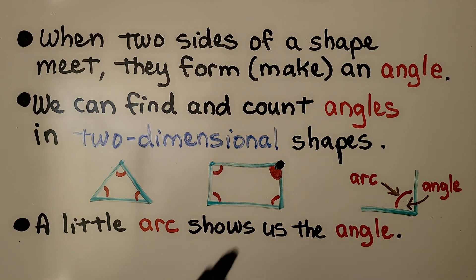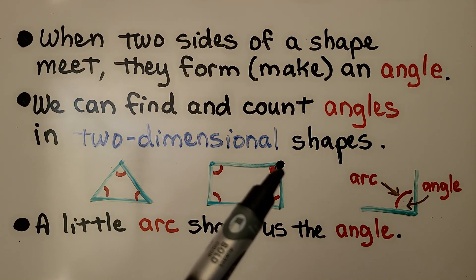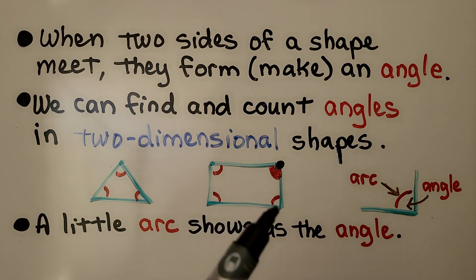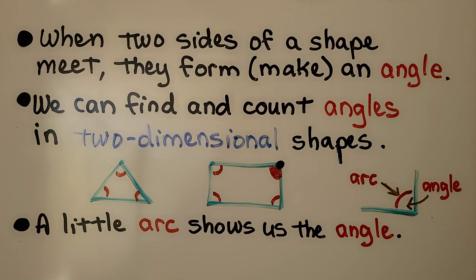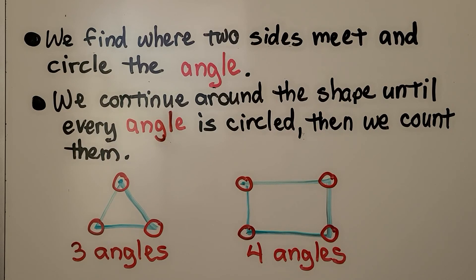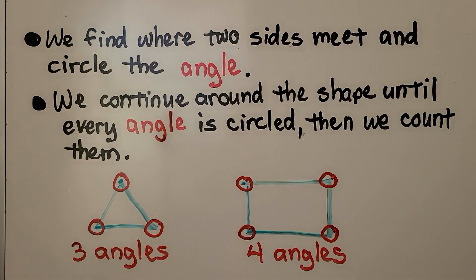The actual point where the two sides meet is the vertex. We find where two sides meet and circle the angle, and we continue around the shape until every angle is circled. Then we count them.